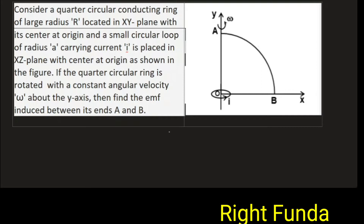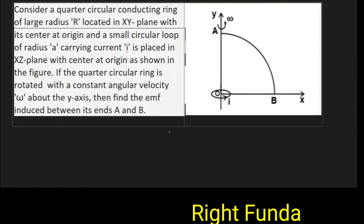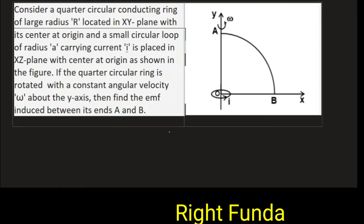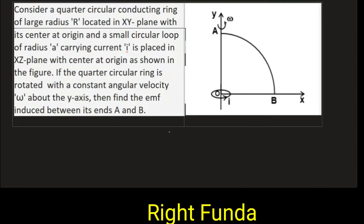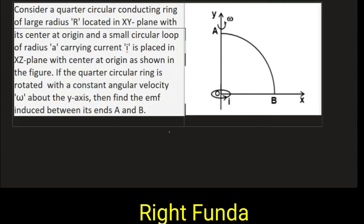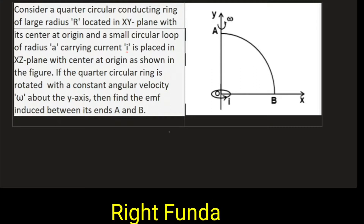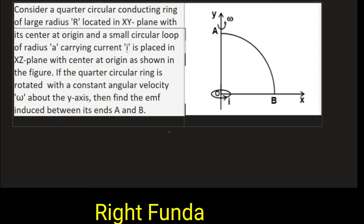Consider a quarter circular conducting ring of large radius R, located in the XY plane with its center at the origin, and a small circular loop of radius small 'a' carrying current small 'i' is placed in the XZ plane with its center at the origin as shown in the figure. If the quarter circular ring is rotated with a constant angular velocity omega about the y-axis, find the EMF induced between its ends A and B.